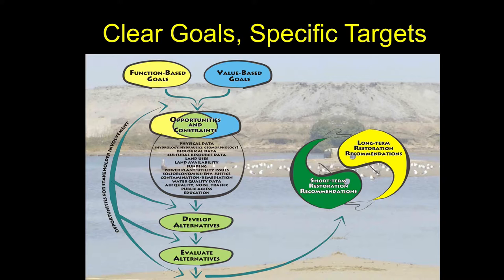Once we have background information and stakeholder input, we want to have very clear goals and very specific targets. One of the historical problems with restoration is we have these very lofty, generic goals that sound great — 'we want high biodiversity, high hydrologic function' — but something so generic that it doesn't specifically guide what to do is a problem. That's what allows non-rigorous performance assessments. Many times we have overly generic goals because people are afraid of being told they failed, so they say 'we want to make it better' and leave it at that. The technical term for that is 'cover your ass.'